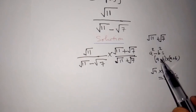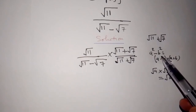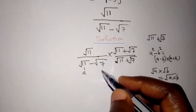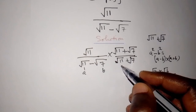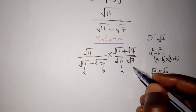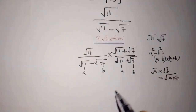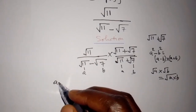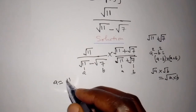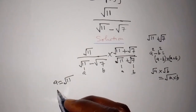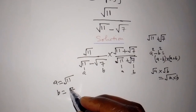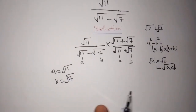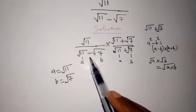Applying the difference of squares, we identify our values: a is equal to square root of 11, and b is equal to square root of 7. We then apply the difference of squares to our denominator.